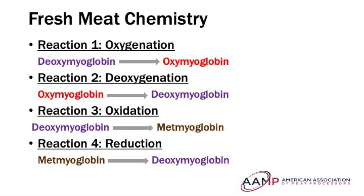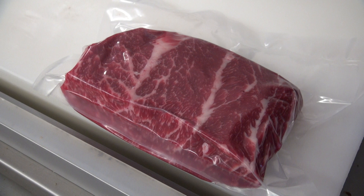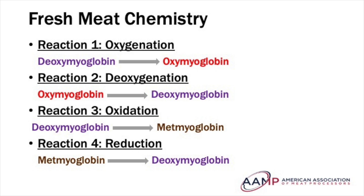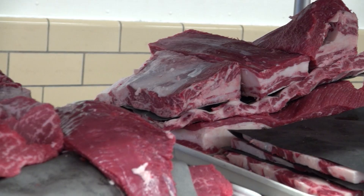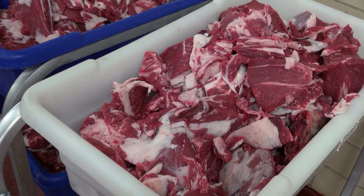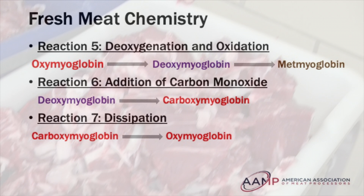Reaction four, called reduction, is the conversion of metmyoglobin to deoxymyoglobin — the reverse of reaction three. In this reaction, iron gains back the electron it lost and is reduced. This reaction is critical to shelf life and preservation of meat products. Meat processors want to encourage the reduced state of deoxymyoglobin to increase myoglobin's ability to react with other molecules, like oxygen, and maintain the meat's color appeal. This reaction is highly dependent on oxygen-scavenging enzymes, reducing enzymes, and other chemicals that help carry electrons in redox reactions. These chemicals are abundant in live animals, but not so in post-mortem meat systems because the tissue is no longer alive.